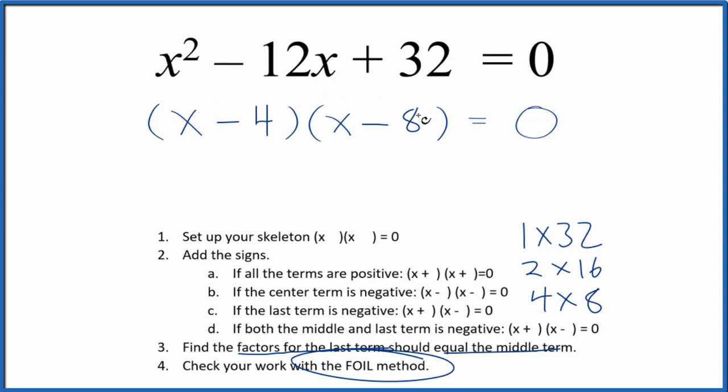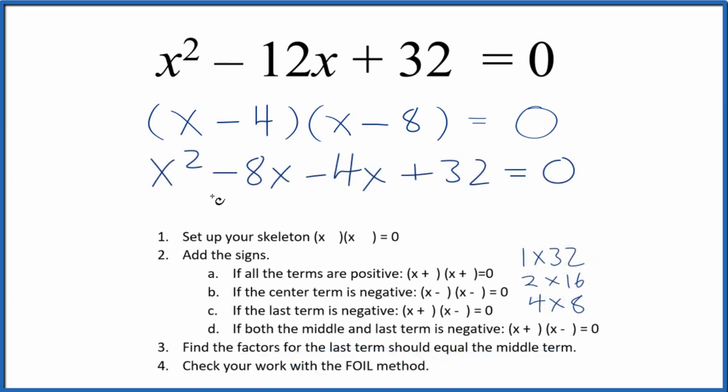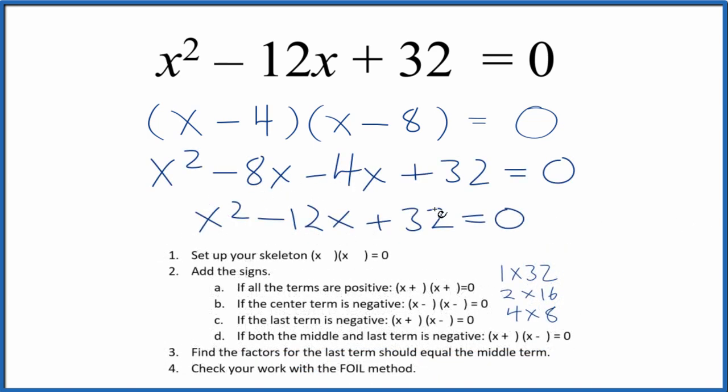We multiply the first, outside, inside, and then the last terms. That gives us... Then we could add negative 8x and negative 4x and get... And this is the same we started out with. So we've correctly factored the equation x squared minus 12x plus 32.